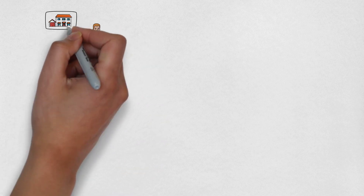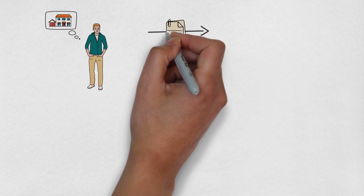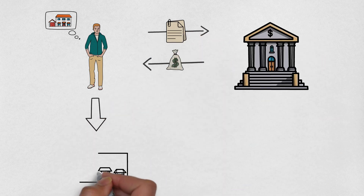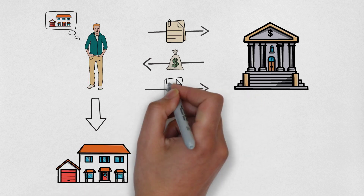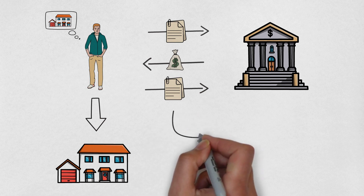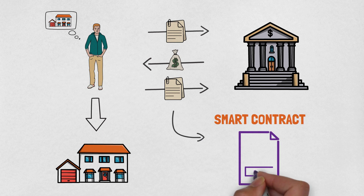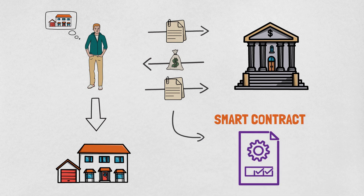If you have ever taken out a mortgage to buy a house, you know how hard the paperwork process is. You need to fill out a lot of paperwork to get the loan and buy a house, and even when you pay it off, you still need to do a lot of paperwork so the bank can check it, and only then you can get the full ownership of the property. With smart contracts, it can be almost automatic. As soon as you pay off the loan, that action triggers the rest and the whole process is a lot simpler since there is no paperwork trouble.